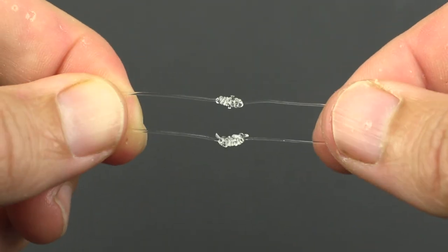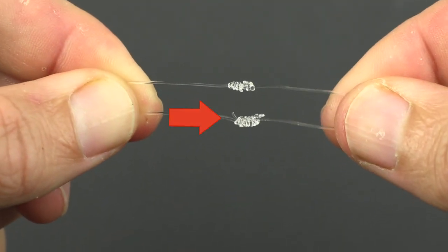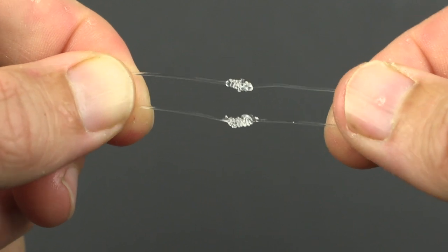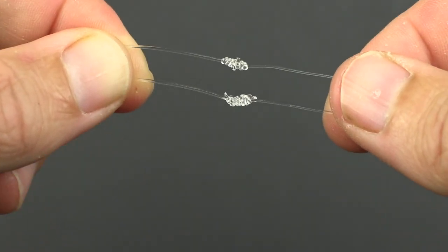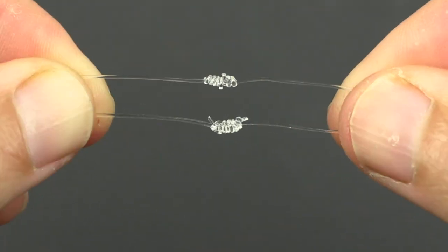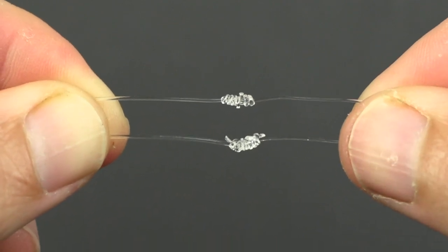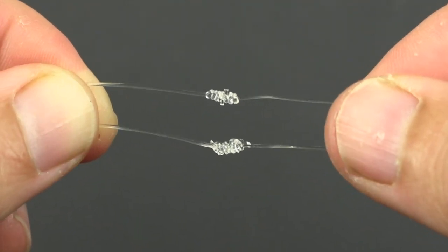This is a very impressive knot contest in which the blood knot versus the uni knot was the test case. We're using mono to mono. This is if you're beefing up your leader line, connecting two lines - mono to mono, mono to fluoro. Definitely check out this blood knot because it proved to be strong.